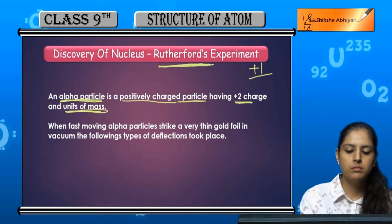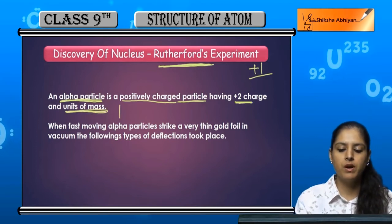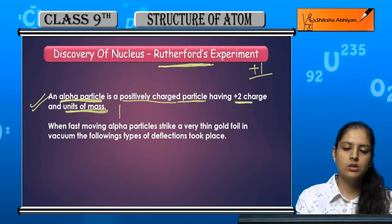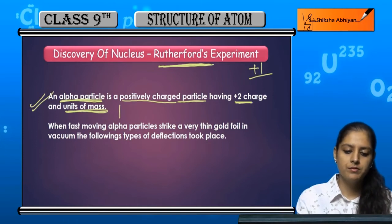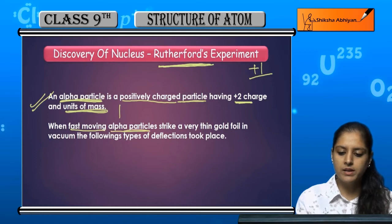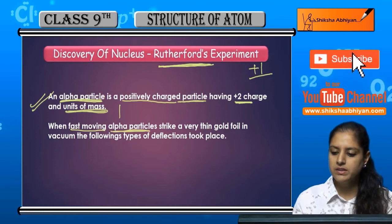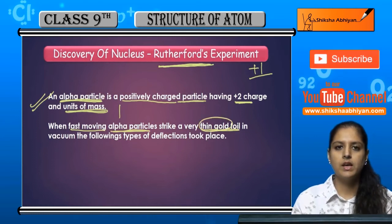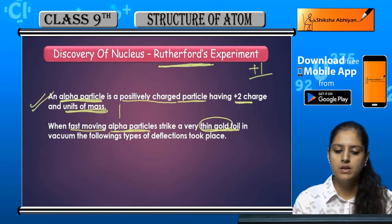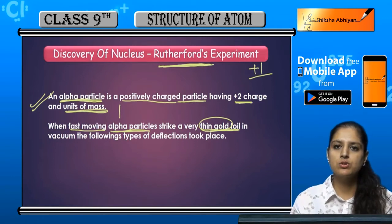When fast moving alpha particles strike a very thin gold foil in vacuum, different types of deflections took place. The experiment involved striking a very thin gold foil with fast moving alpha particles.